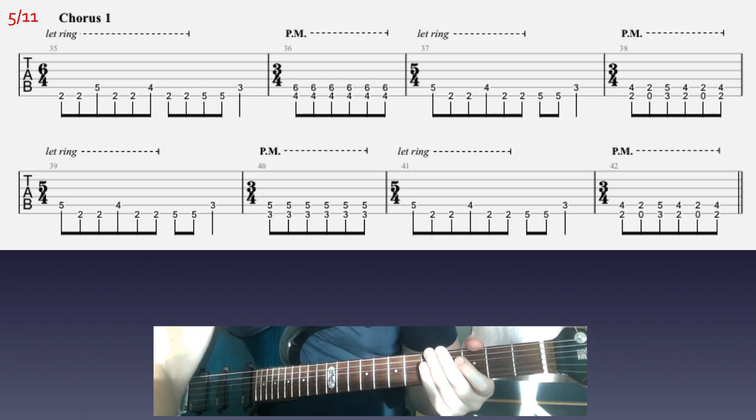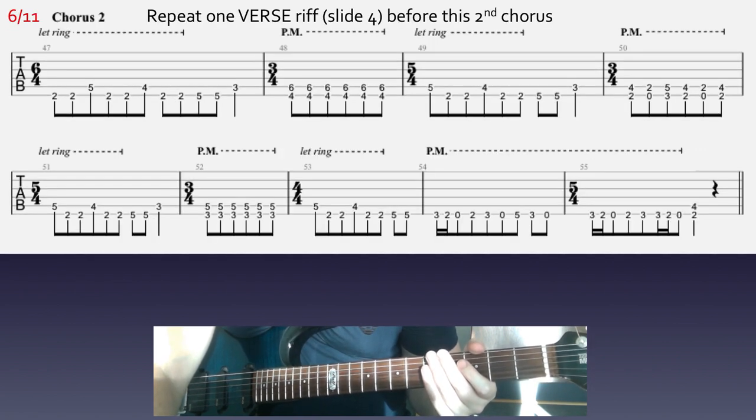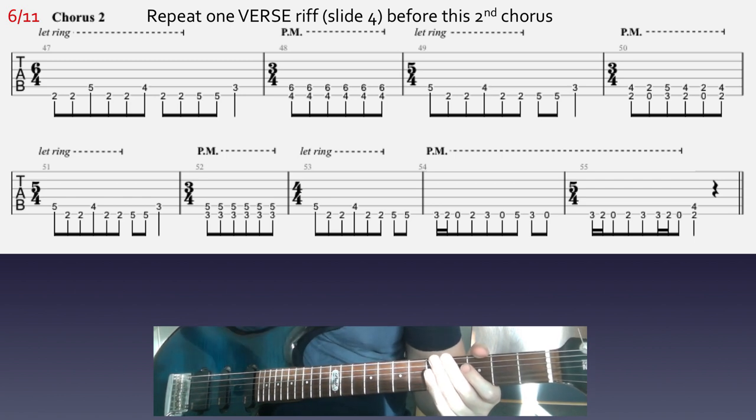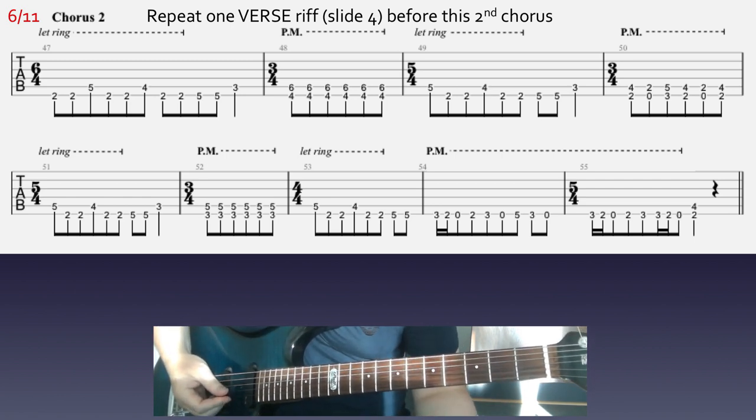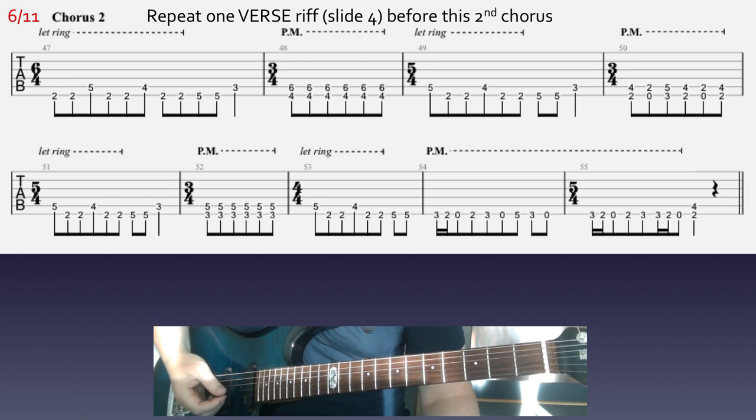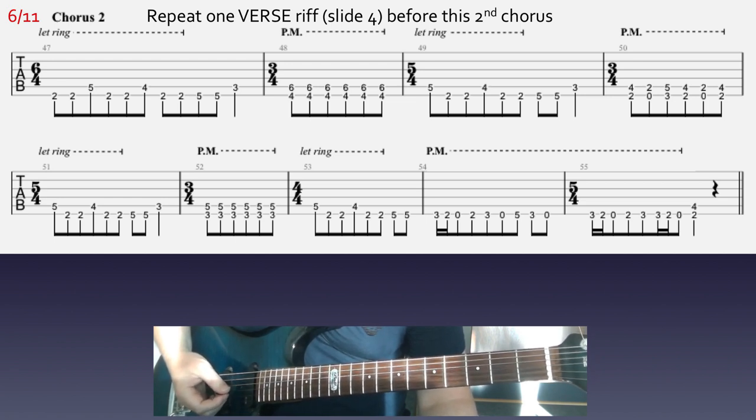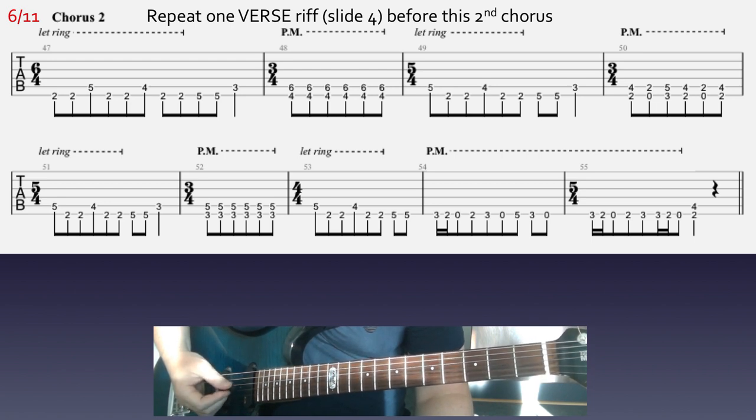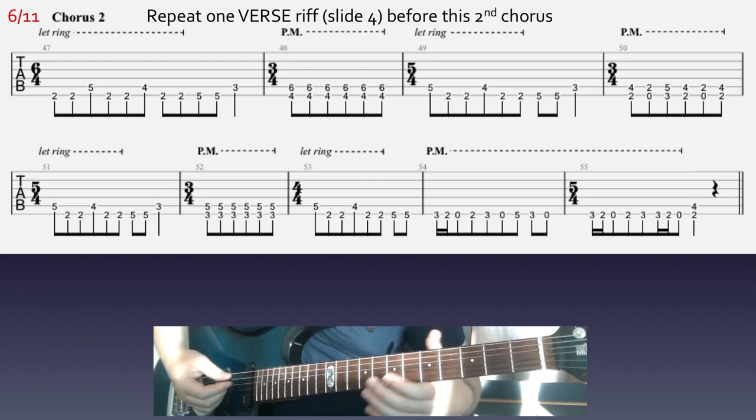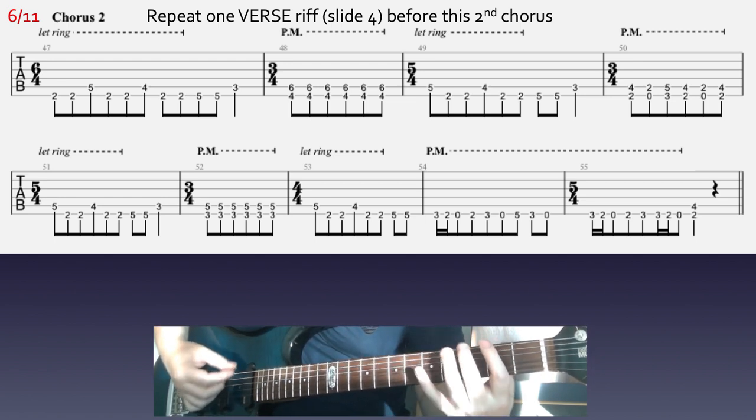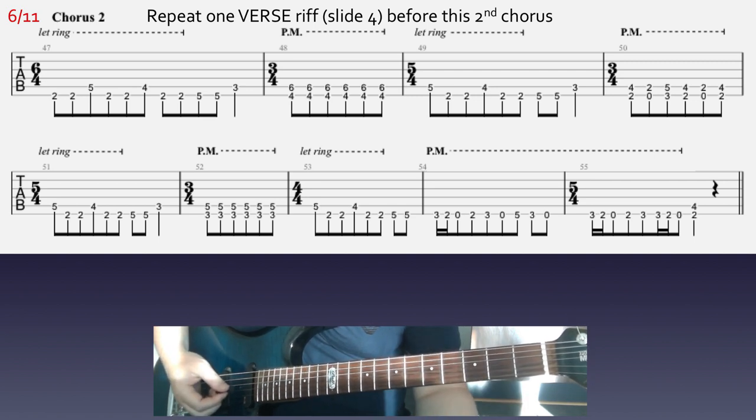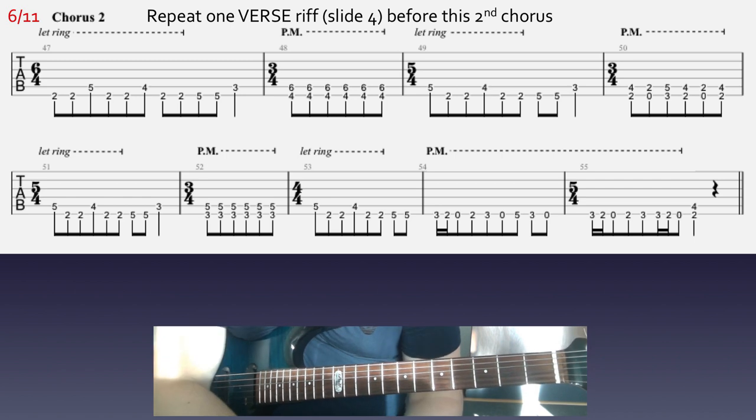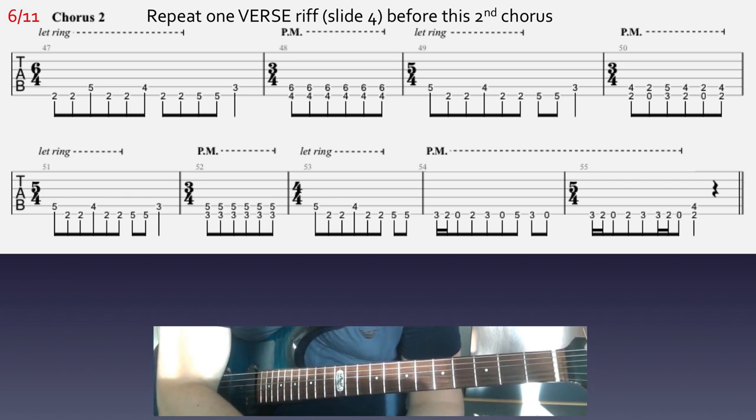Let's continue on to the next part. Here we're actually gonna have the second chorus eventually, but before the second chorus we're gonna play one more verse riff exactly the same as we had on slide four. Then you're gonna have this second chorus. The first part here is the same as in the previous chorus, then the second line is a slightly different ending. The final two bars in the second line go like this.